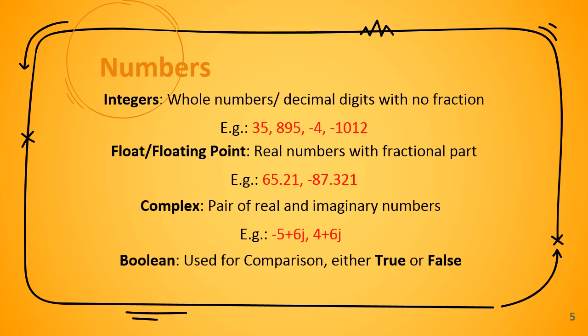Complex numbers are commonly used in scientific contexts. They are a pair of real and imaginary numbers taking the form a + bj, where a is the real part. For example: -5 + 6j or 4 + 6j. Boolean is a data type used in comparison situations. It always results in either True or False — those are the only two possible values.